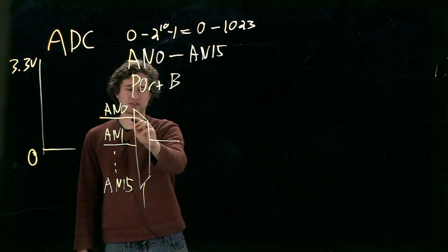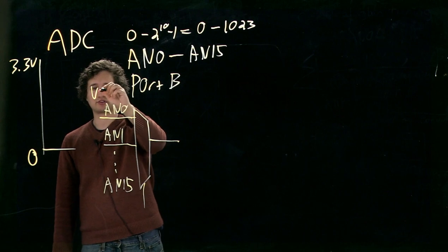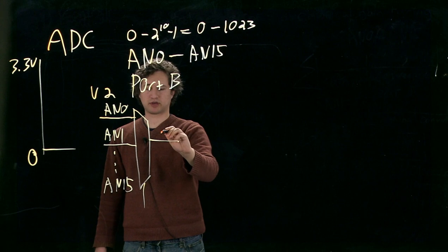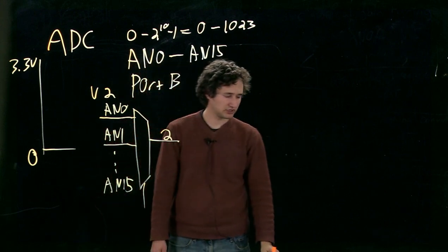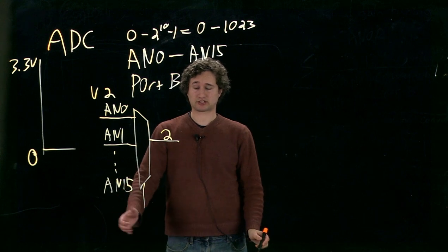So let's say we've selected AN0, and let's say that AN0 has a voltage of 2. Well, now this pin here will have a voltage of 2. That's the first step. The first step in analog to digital conversion is selecting the proper pin.